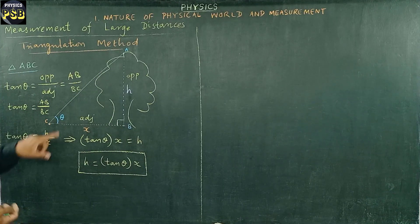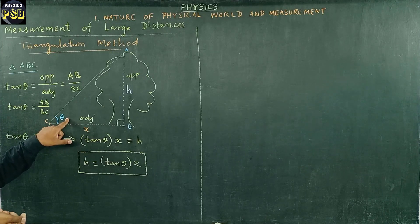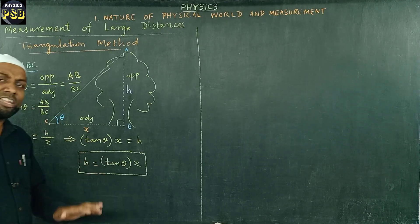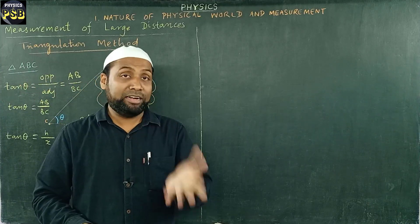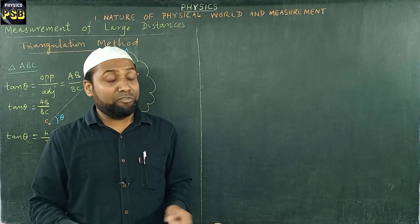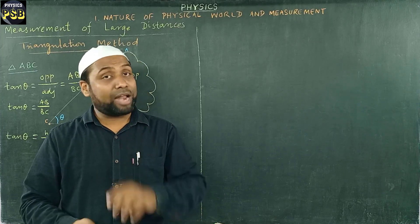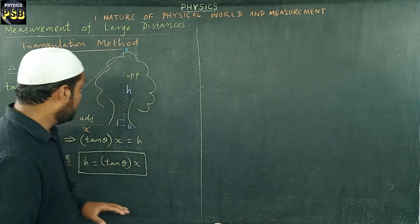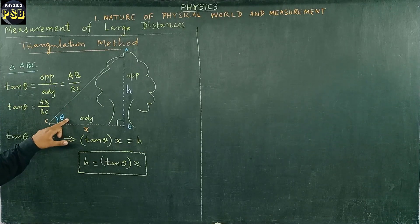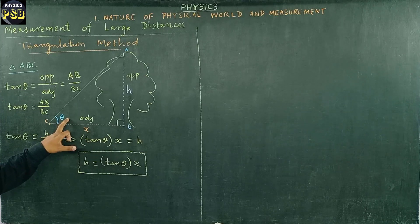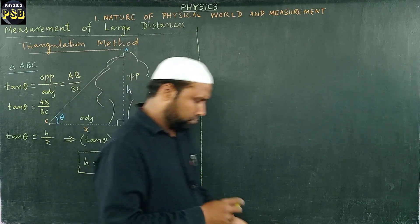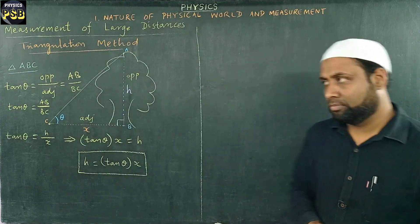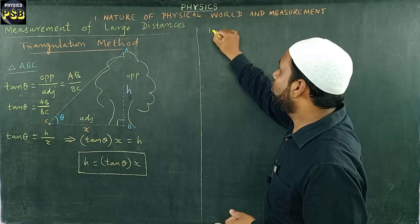Here, theta is known as the angle of elevation. The angle of elevation can be obtained with the help of a range finder. A range finder can be made very easily with the help of a protractor. Now I will solve one problem — it is problem 1.1.